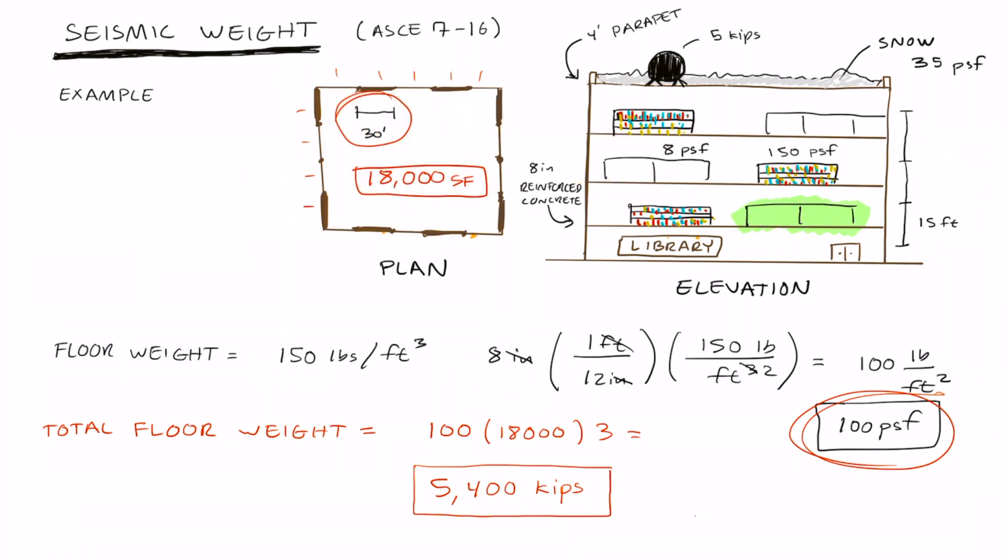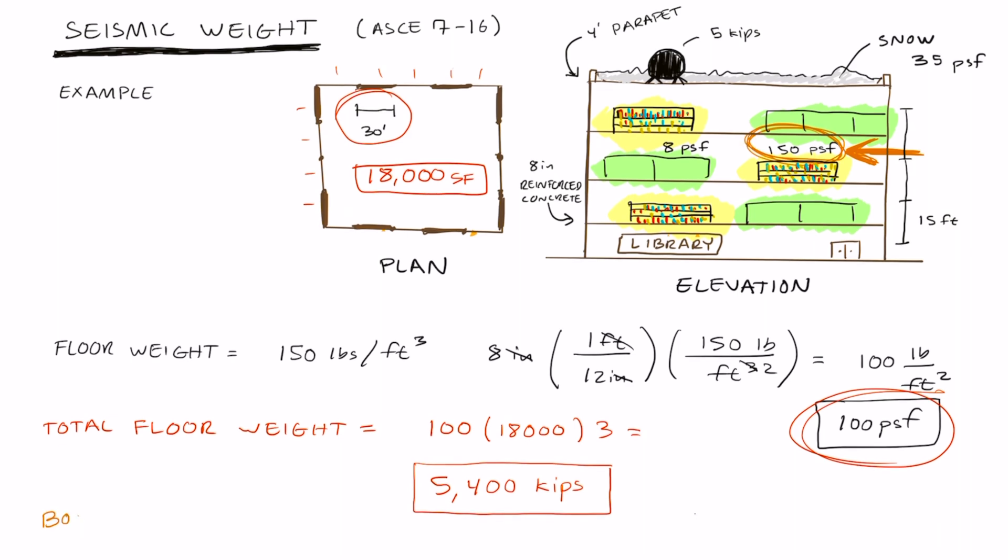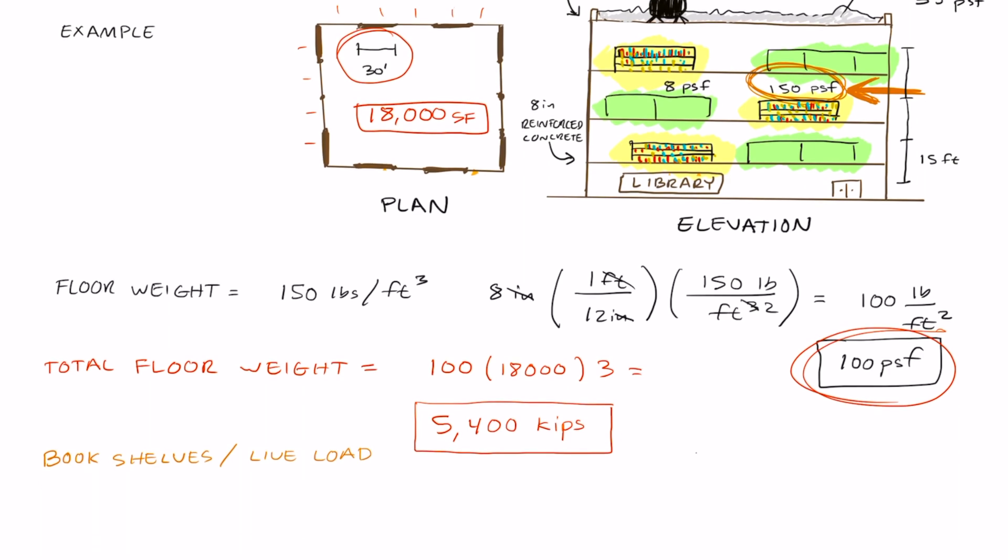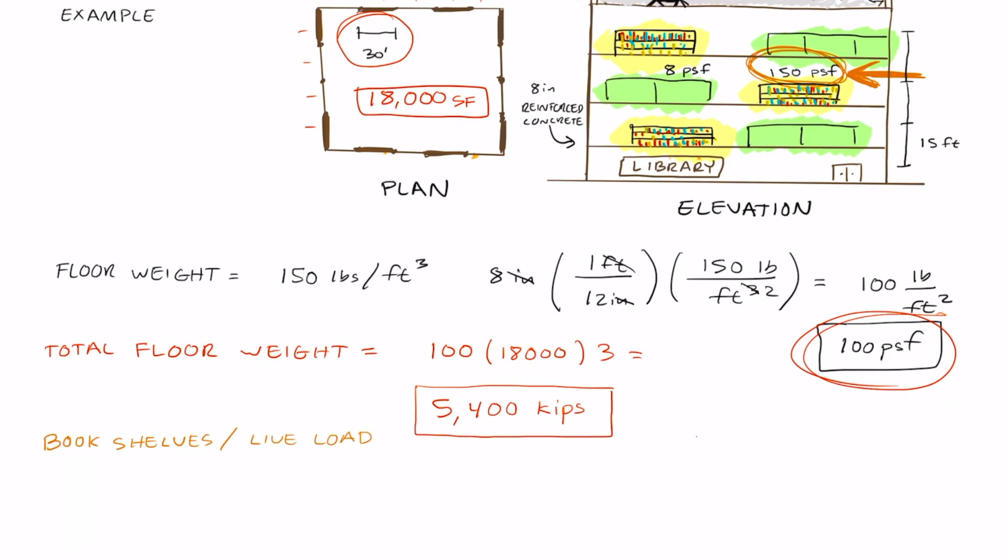Now let's look at the objects that are inside of the building. We have the partitions, and we have the bookshelves, which are considered a live load. Let's look at the bookshelves first. The bookshelves are 150 pounds per square foot. The bookshelves are considered to be a live load. So we'll take 25% of 150 pounds per square foot, and that gives us 37.5. We'll multiply this by 18,000 square feet, the square footage of each floor, and times 3, the number of floors. This gives us 2,025 kips for the bookshelves.